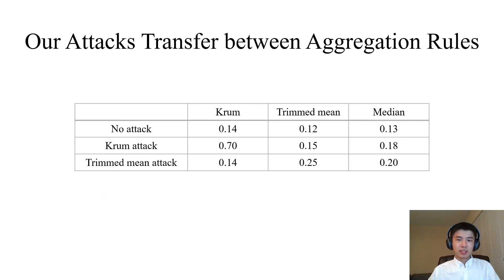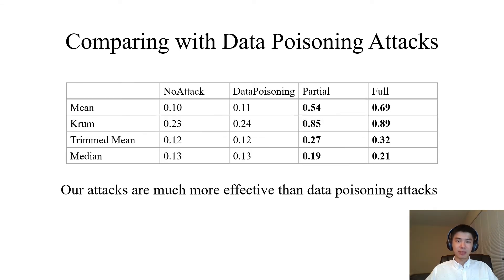We mentioned that an attacker may not know the aggregation rule used by the master. In this case, the attacker needs to take a guess. We explore the transferability of our attacks between aggregation rules and observe that some attacks can transfer while others cannot. We also compare our attacks with data poisoning attacks, selecting a state-of-the-art data poisoning attack for comparison. As we can see, our attacks outperform the data poisoning attacks with large gaps.